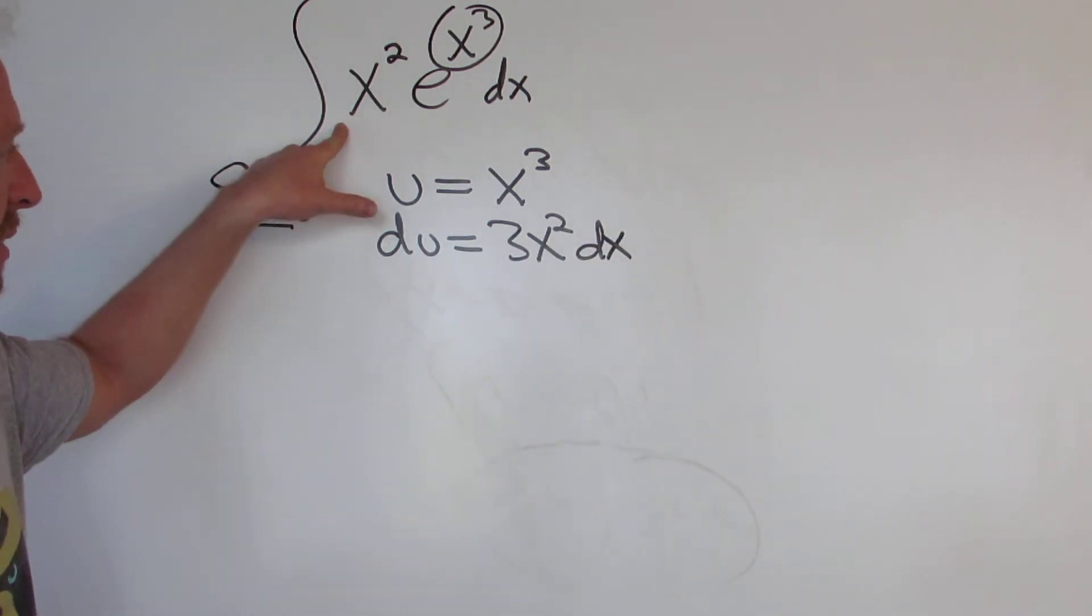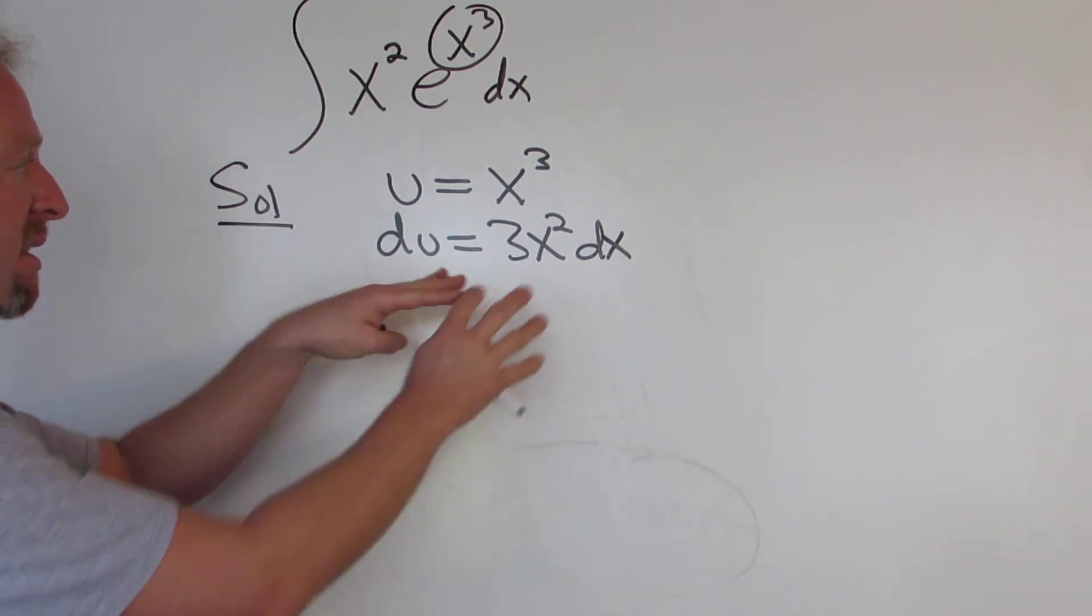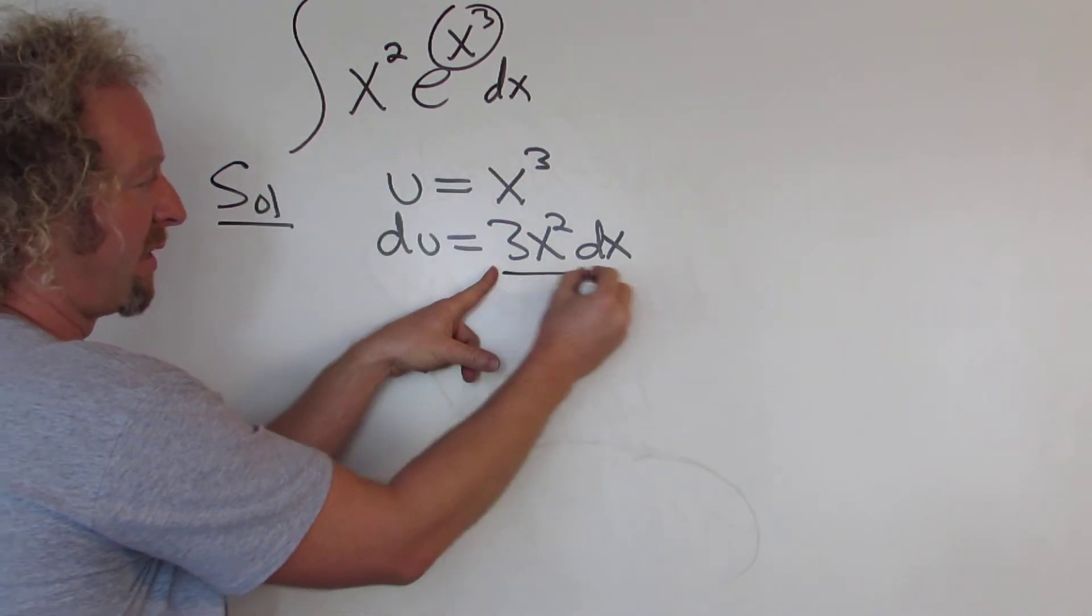Now you'll notice here there is no 3, and here there is a 3. So the idea is to make this look like this. So we'll divide both sides by 3.